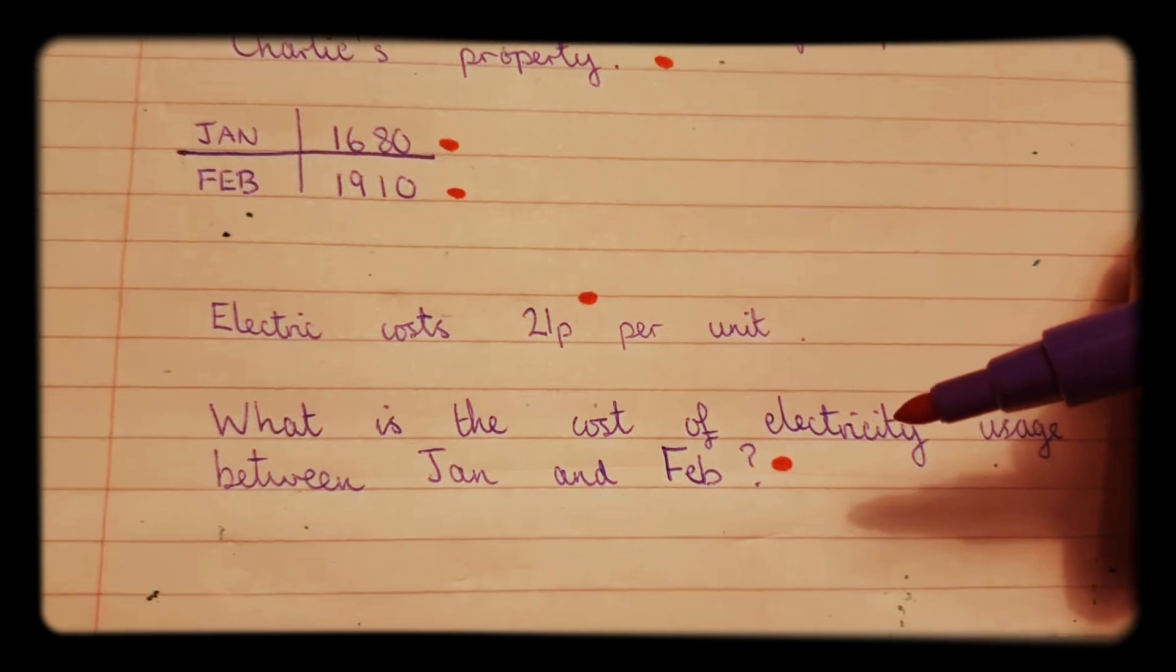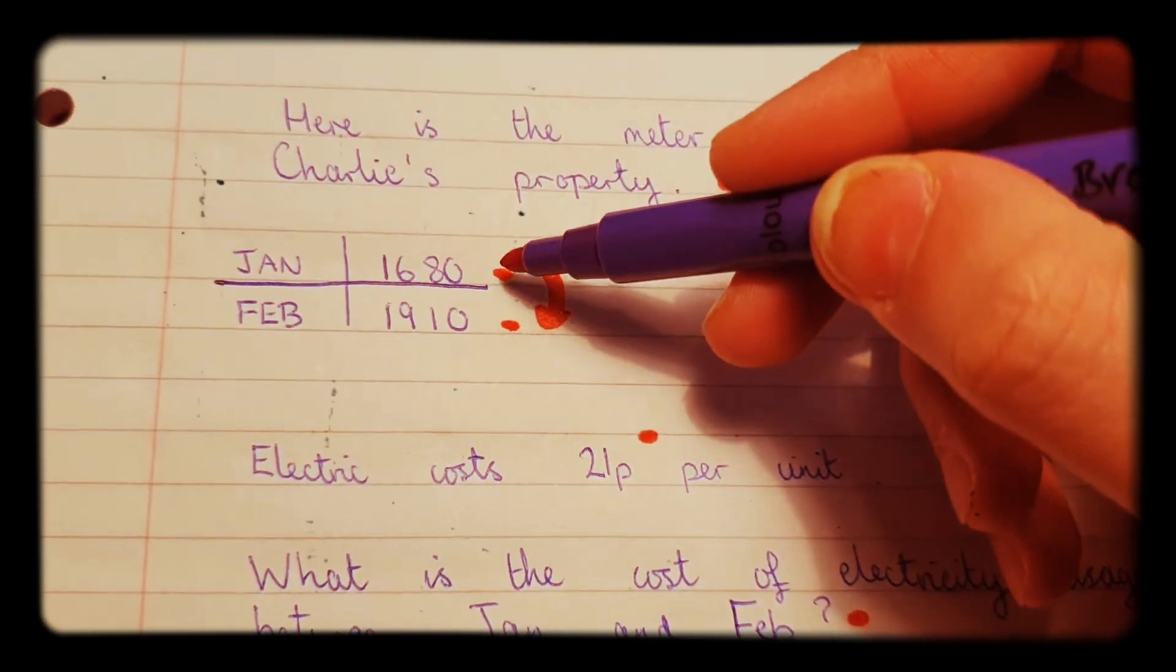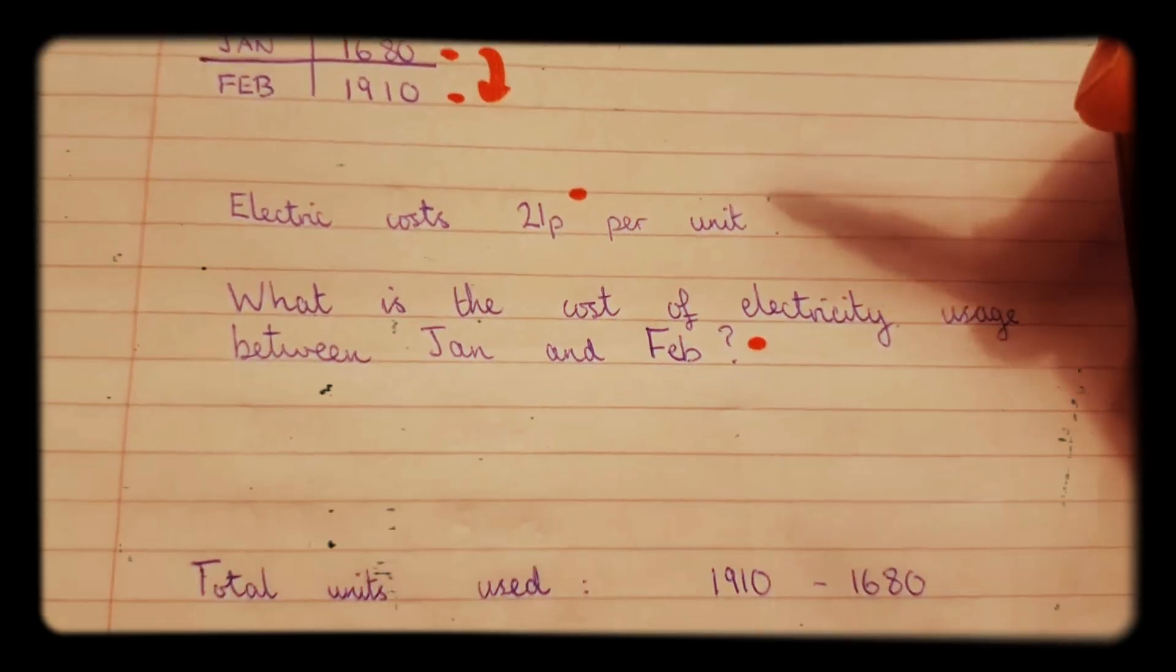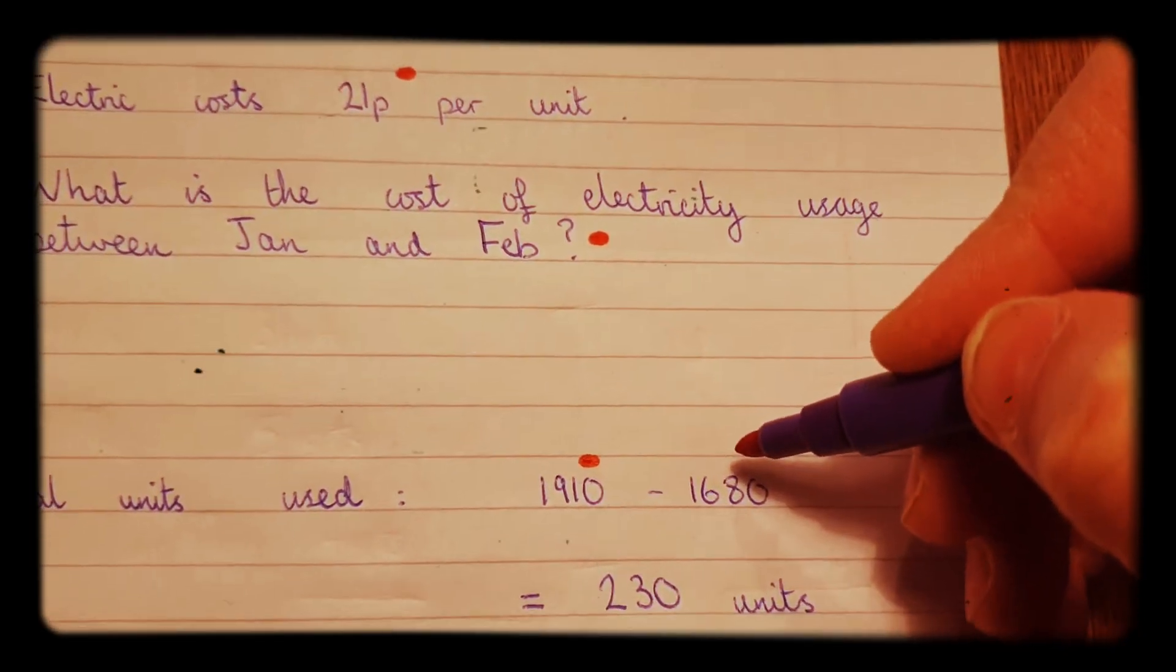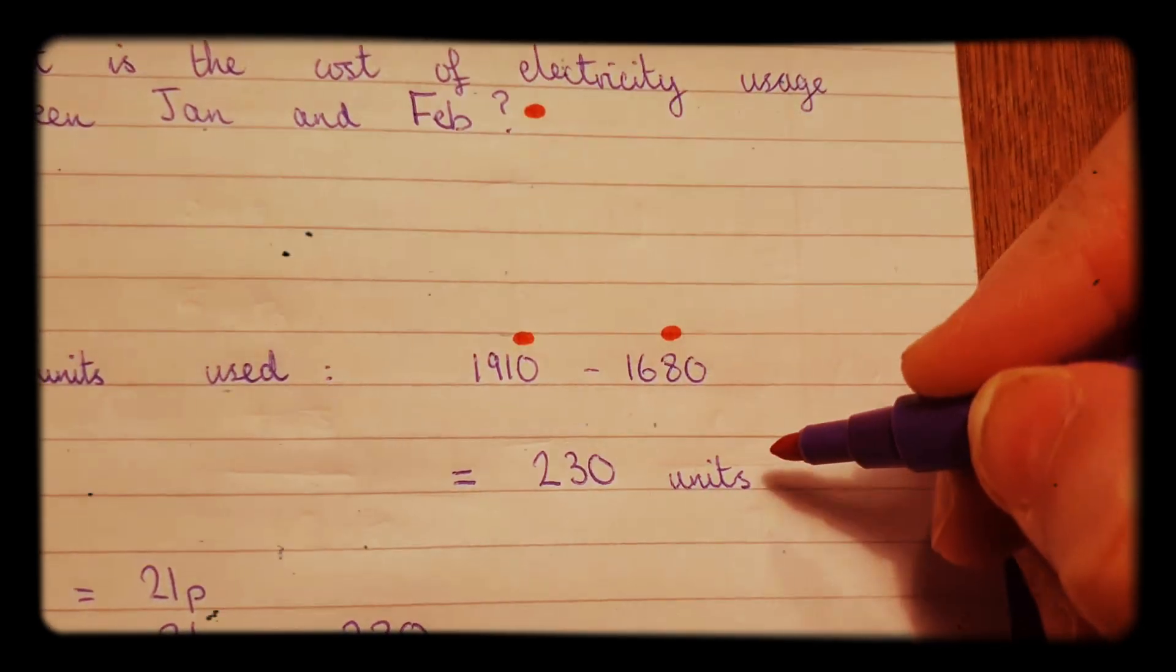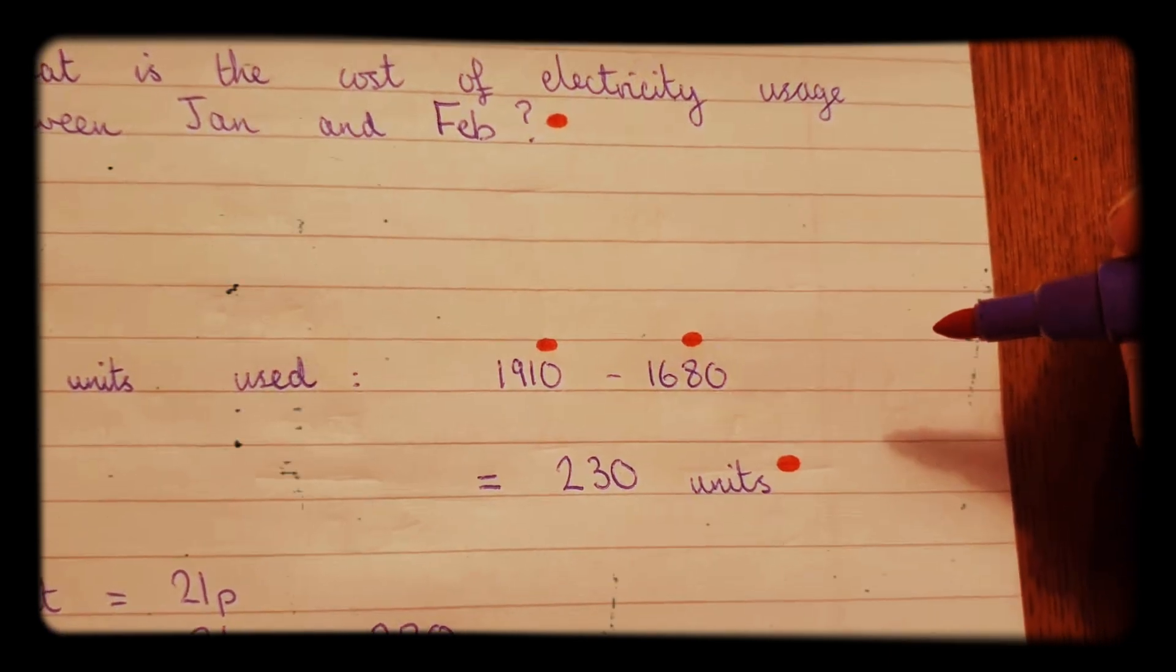The way you do this, you need to figure out what is the amount of electric that's been used between January and February. To do that you do 1910 take away 1680, and you'll find out that 230 units were used between January and February.